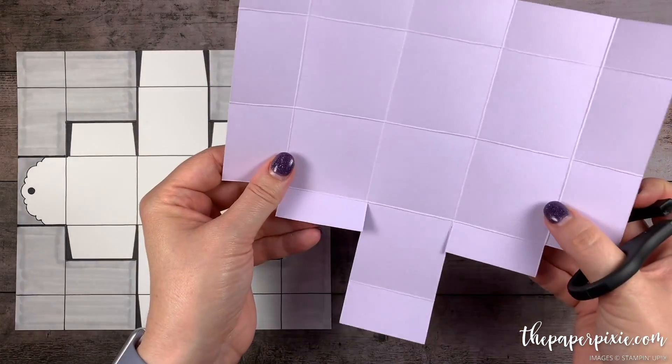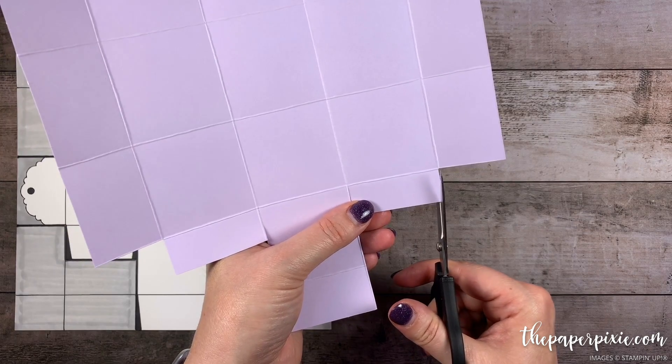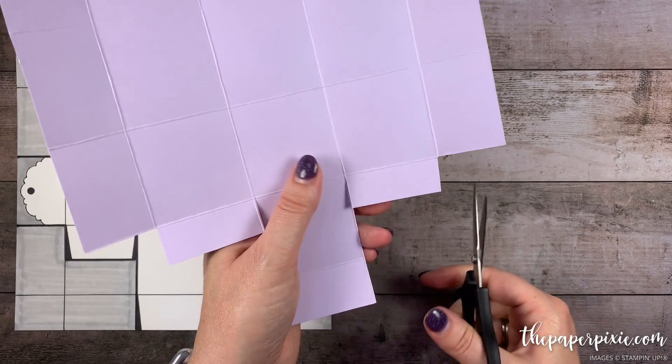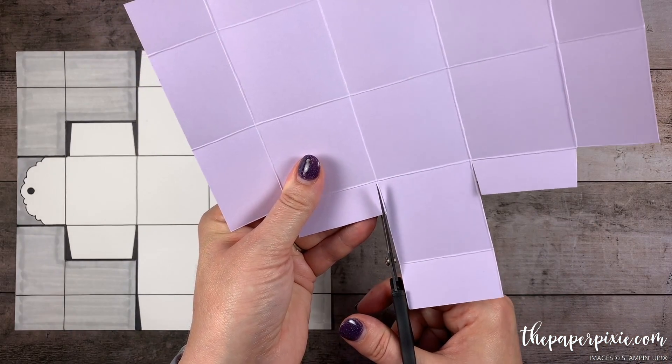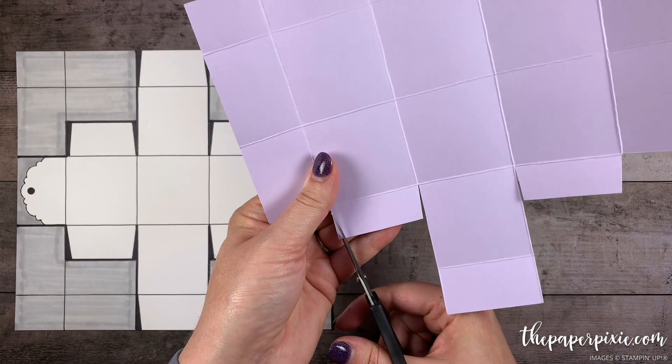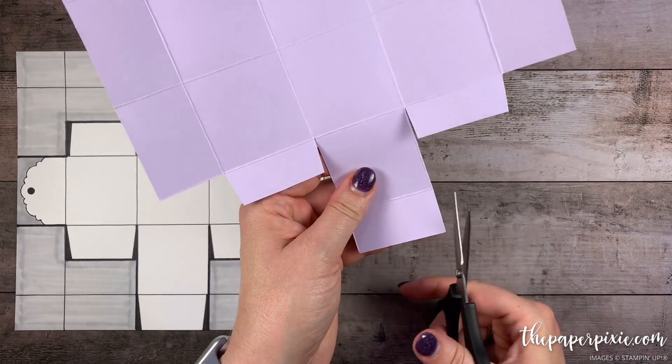And those are going to end up being the tabs that we use to glue our box together. So because of that we're going to come in and notch each of those pieces. Then we're also going to notch this little 1 inch section here as well.